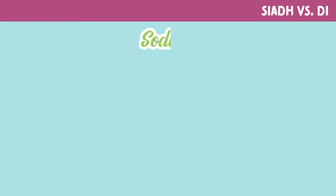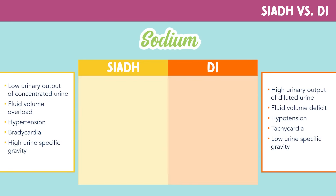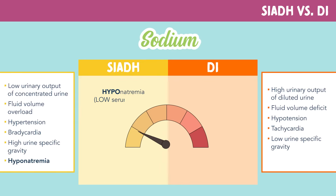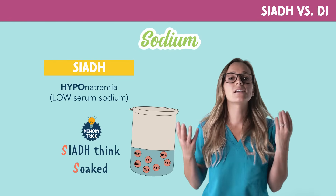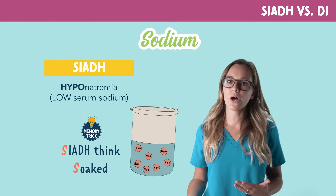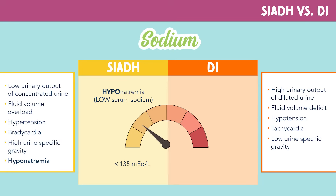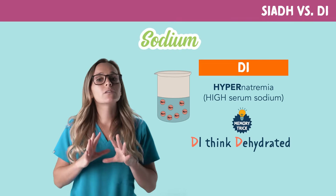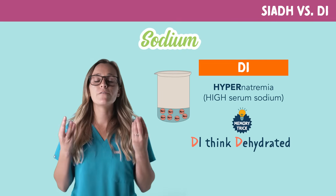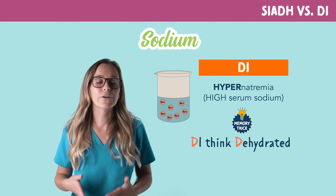Next, we'll look at sodium. In SIADH, we will see hyponatremia, or a low serum sodium, less than 135 mEq/L. Remember, SIADH thinks soaked, so the water is diluting the sodium, making it appear low. In DI, we will see hypernatremia, or high serum sodium, greater than 145 mEq/L. Remember, DI — think dehydrated — so the lack of water makes the sodium very concentrated, making the sodium appear high.